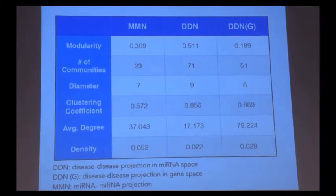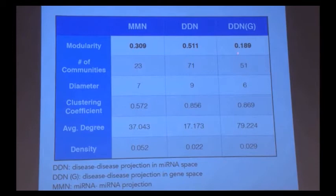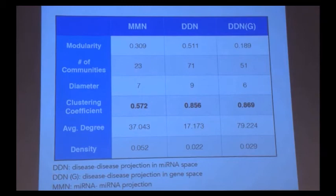This table summarizes some of the main metrics of the different projections. The two main takeaways are: first, the disease projection in micro-RNA space had the highest modularity and was most easily divided into sub-networks, while the disease projection in gene space had the lowest modularity. Also, the clustering coefficient is very high in the disease projection in micro-RNA space, whereas in the micro-RNA projection it is much lower, showing less clustering in that network.